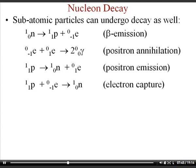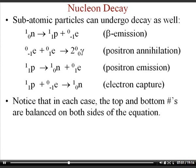In electron capture, a proton smashes into an electron and turns into a neutron. Notice that in each of these equations, the top numbers and the bottom numbers are balanced, ensuring conservation of nucleons.